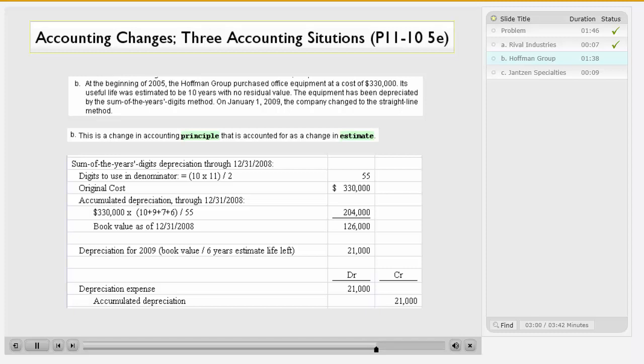Now, we account for the change in principle as a change in estimate. So, to calculate depreciation for 2009, we take the book value that we just calculated, and we divide it by the 6 years estimated life left. That comes out to be $21,000. So, our depreciation expense adjusting journal entry for the year is a debit to depreciation expense of $21,000, and a credit to accumulated depreciation in the same amount.